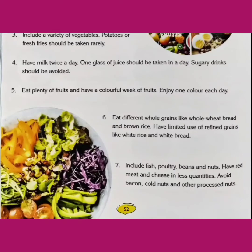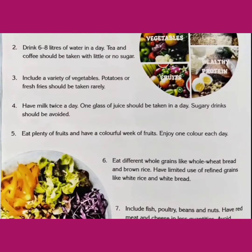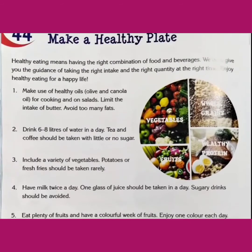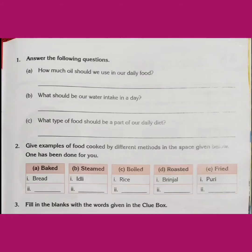तो इस chapter में हमने देखा कि हमें एक healthy diet लेनी चाहिए। हमारे diet में water होना चाहिए, green vegetables, fruits और less oil होना चाहिए। ये सारी चीजें हमारे health के लिए अच्छी होती हैं। तो चलिए अब हम इस chapter पर based exercises को complete करते हैं — Page number 53। सबसे पहले today's date और classwork mention करें, फिर exercises को pencil की help से neat and clean handwriting में fill करेंगे।